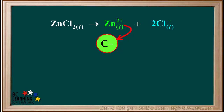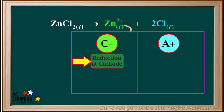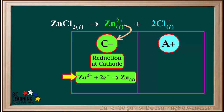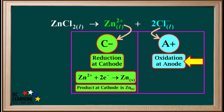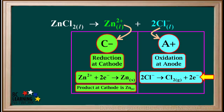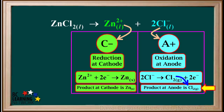We write C-minus for the cathode underneath the positive ion — the positive ions are attracted to the negative cathode. And we write A-plus for anode underneath the negative ions — the negative ions are attracted to the positive anode. Reduction of Zn2+ ions occurs at the cathode. Its half-reaction is Zn2+ plus 2 electrons gives Zn solid, and the product at the cathode is zinc solid. Oxidation of Cl- ions occurs at the anode. Its half-reaction is 2Cl- gives Cl2 gas plus 2 electrons, and the product at the anode is chlorine gas, Cl2.